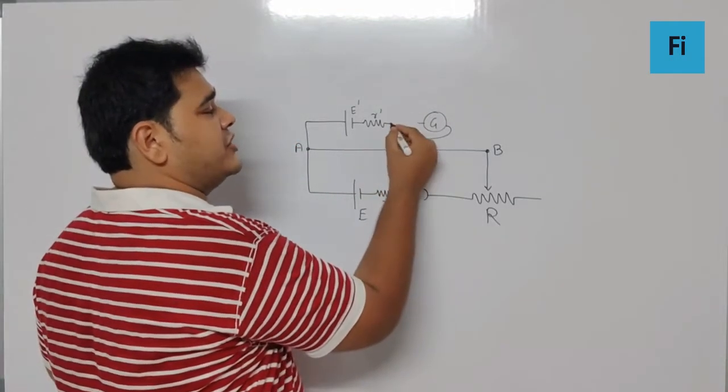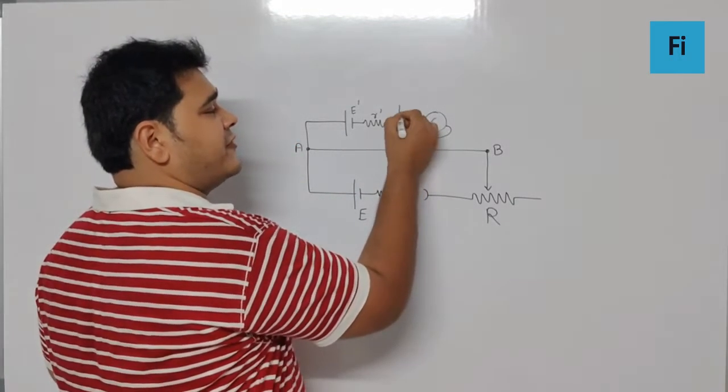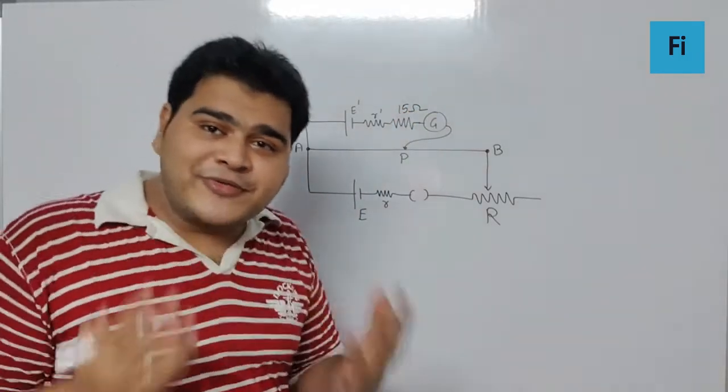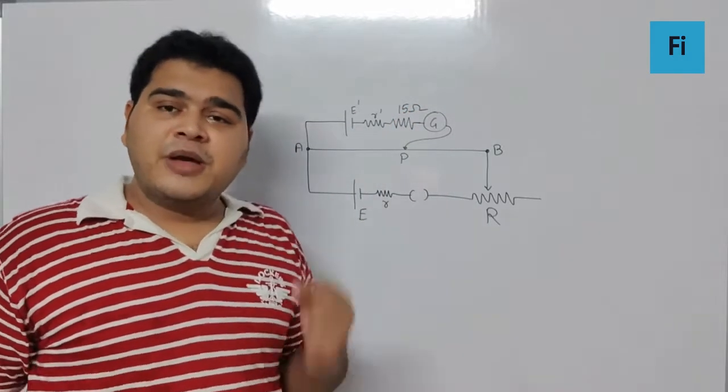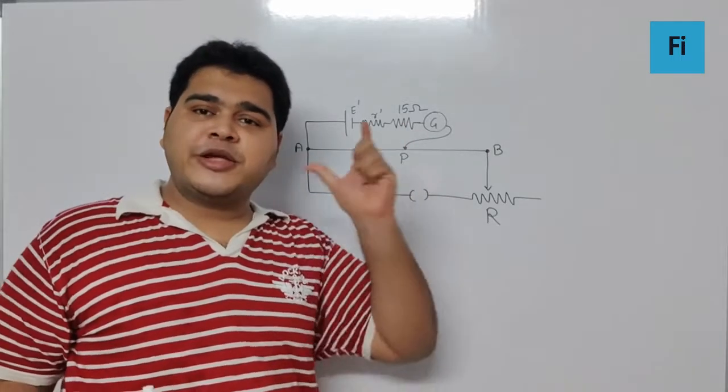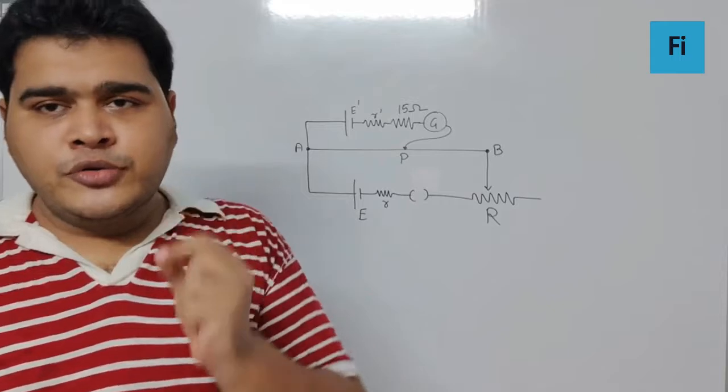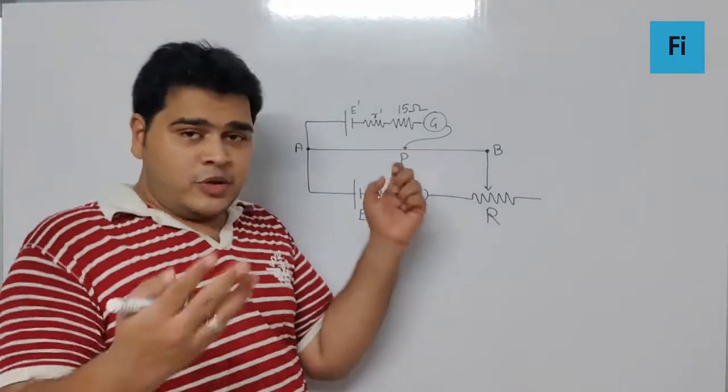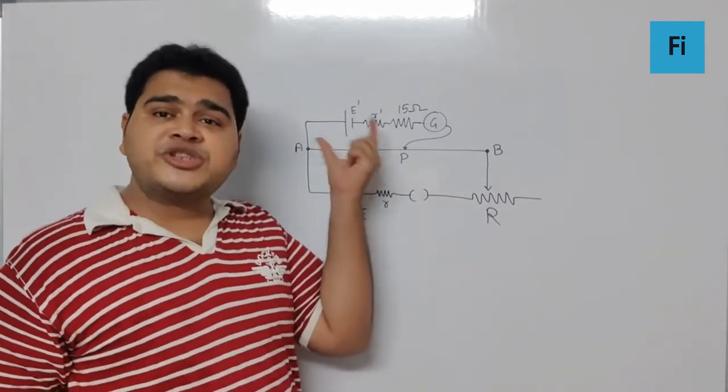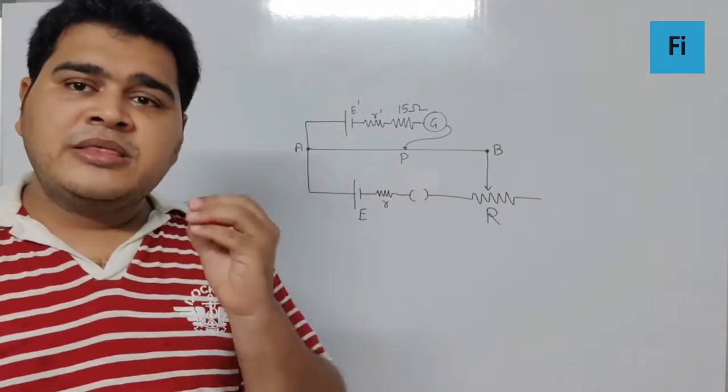If you connect a resistance of 15 ohm, that will make no difference for the balance point because there is no current flowing through that branch at that particular time. When you introduce a resistance, it will be between the balance point and the EMF for which it is to be measured. There is no shift of the balance point.